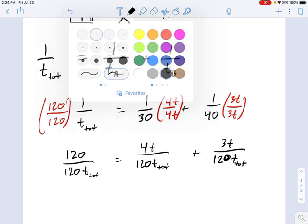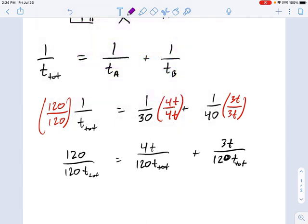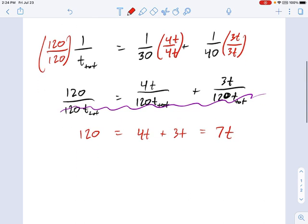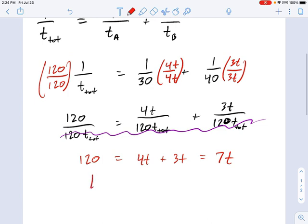Now it's a rational equation, and all the denominators are equal, so we can just cross those out. And all that's left over for us is 120 equals 4t plus 3t, which is just 7t, which means the time it takes them to work on this shed and get it done is 120 divided by 7.